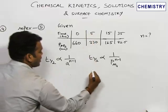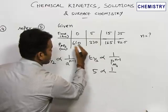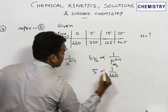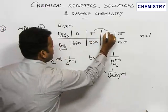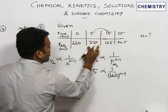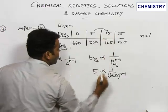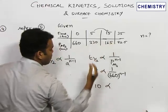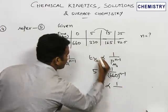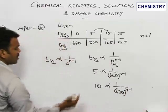So for first half-life period, the initial partial pressure is 660 power n minus 1. Similarly, from this to this, if this is the initial value, then this will be the half-life. So from 5 to 10 minutes, what is the time taken? 10 minutes. So 10 minutes is the second half-life time, which is also proportional to 330 power n minus 1.